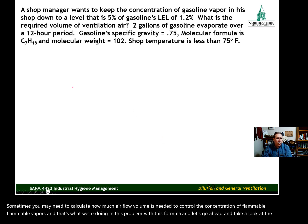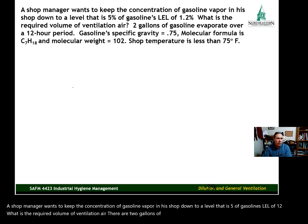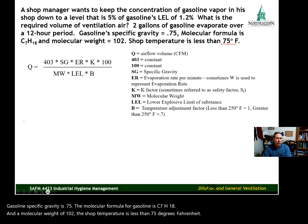A shop manager wants to keep the concentration of gasoline vapor in his shop down to a level that is 5% of gasoline's LEL of 1.2%. What is the required volume of ventilation air? Two gallons of gasoline evaporate over a 12-hour period. Gasoline's specific gravity is 0.75, the molecular formula is C7H18, and molecular weight is 102. The shop temperature is less than 75°F.